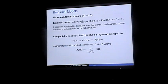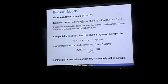We impose a compatibility condition: the distributions agree on overlaps. Whenever we have two different contexts C and C', the marginal of the distributions restricted to the intersection of C and C' will be the same. This might be familiar from non-locality as the no-signaling principle. In a Bell scenario like the one we were discussing, this reduces to the usual no-signaling principle.